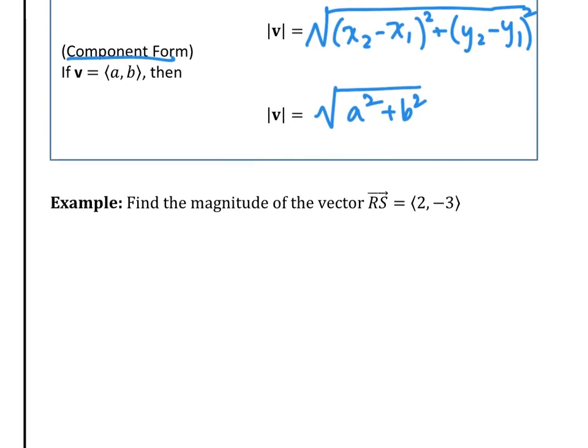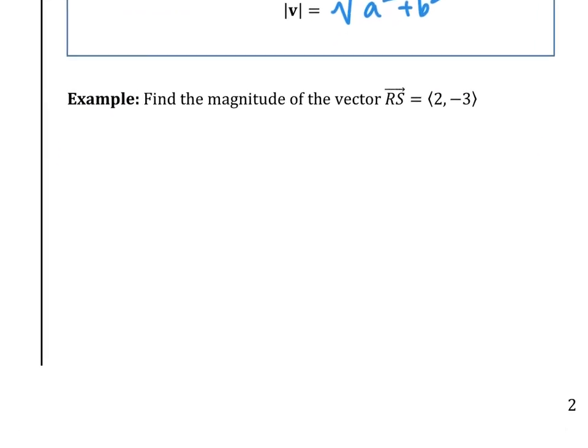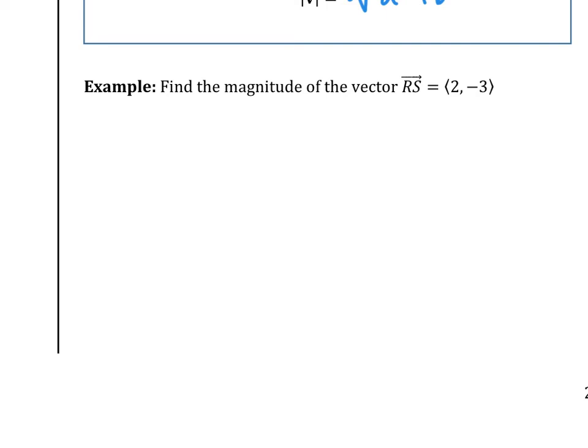Let's try one: find the magnitude of vector RS given in component form as ⟨2, -3⟩. Using the Pythagorean theorem, the answer is √(4 + 9) = √13.